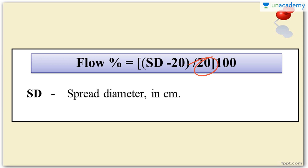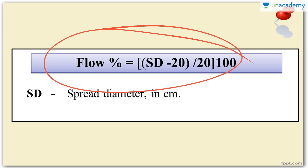Once the concrete spreads after the mold is removed, examine the spread. If there is too much water, the aggregates will stick to the center while the water flows outward — indicating a too-wet mix. The main result obtained is the spread diameter, from which we can understand how much flow has occurred. The flow percentage tells us what percentage of flow the concrete mixture has undergone.